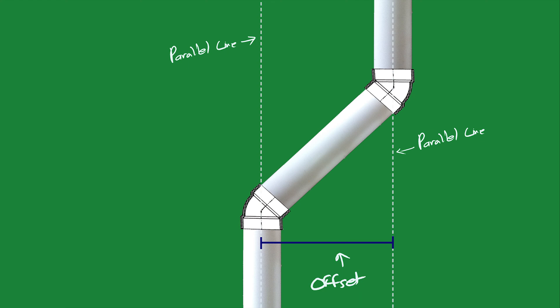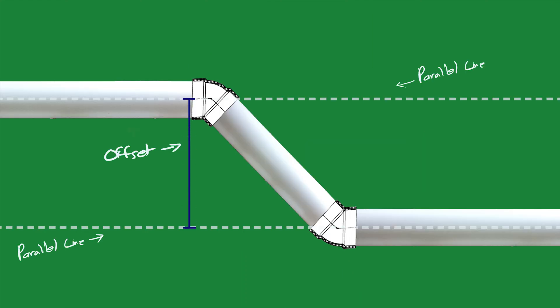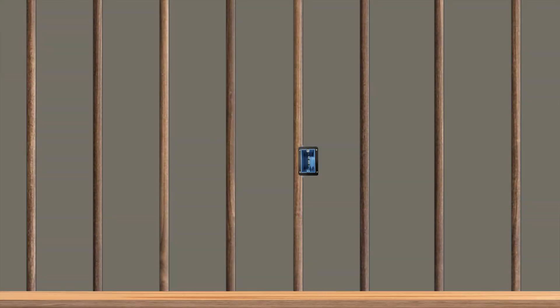Distance between the center lines of two parallel pipes is called an offset. They may be vertical or horizontal. Offsets are used to get past obstacles, for instance an electric box.